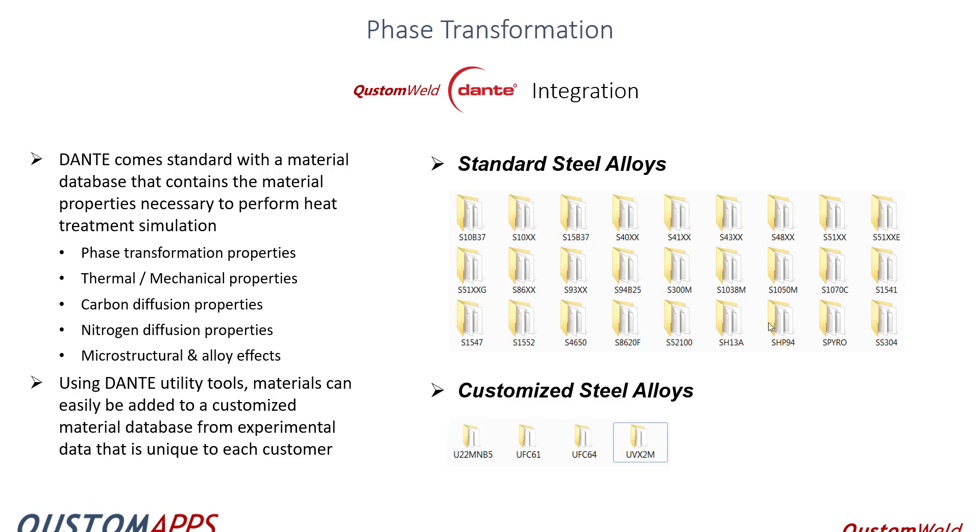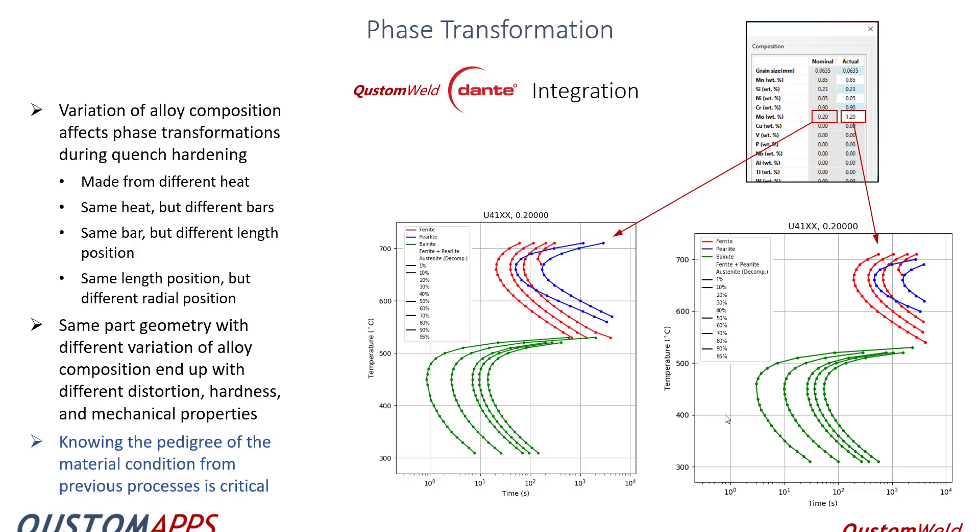Just a list of the standard alloys that are built into Dante. So we have 20 or 25 of them. They contain all the necessary properties to perform in the phase transformation properties, thermal mechanical properties, carbon diffusion, nitrogen, microstructural and alloy effects. And Dante has a lot of capabilities when it comes to actually customizing your materials. So if you have the experience to do that, you can generate your own customized steel alloys. It's got a few of them built in, but you can then generate on top of those.